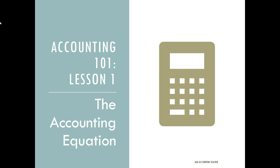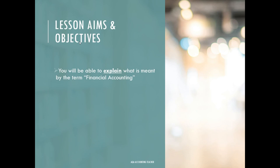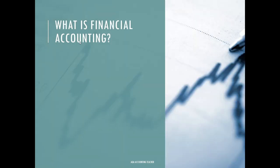The first session is looking at something called the accounting equation. Our aims and objectives for this session are that by the end of it you'll be able to explain what is meant by the term financial accounting, differentiate between assets, liabilities and owner's capital, and demonstrate how the accounting equation is affected by certain business transactions.